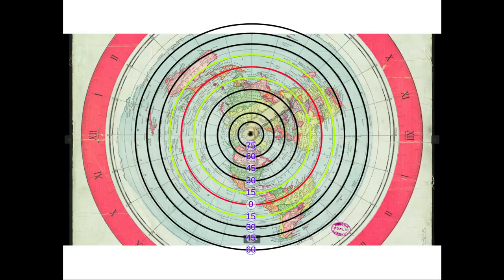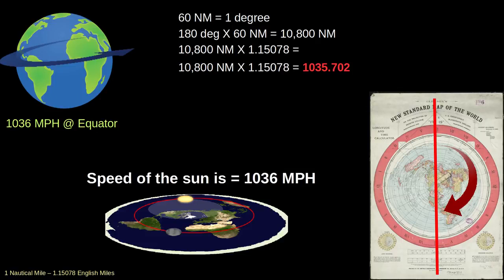That is why when I did the calculation on the speed of the sun, it all worked out — because it's at the equator. At the equator, one degree equals 60 nautical miles. So at that point it makes sense both for latitude and longitude — each degree will be 60 nautical miles. Once you deviate from that it all changes, but that's what they used to calculate the speed of the earth, which really was the speed of the sun at the equator going over the flat earth.